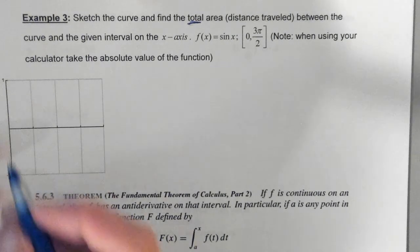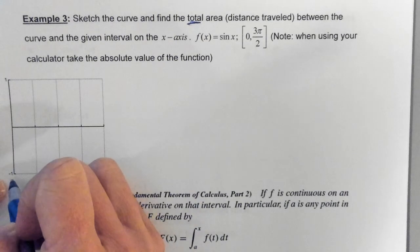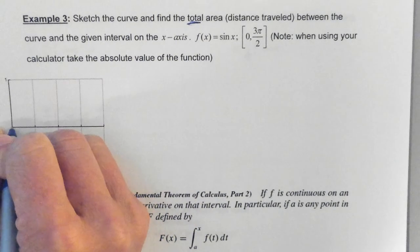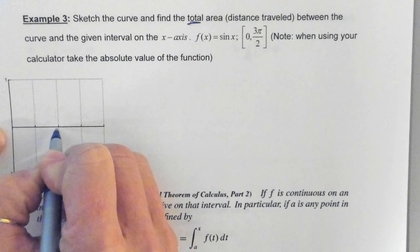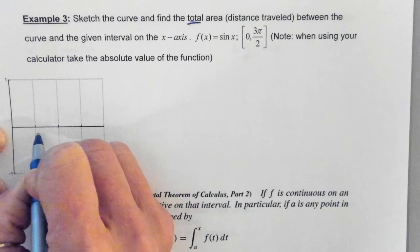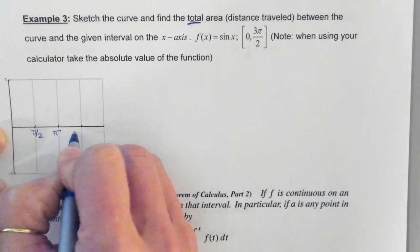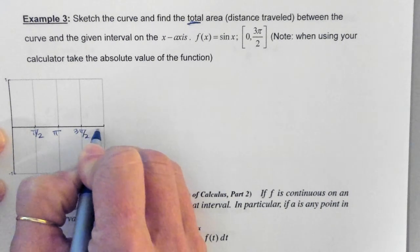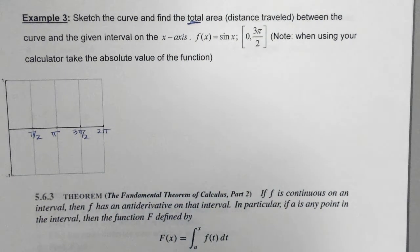So if I were to graph this function, this is a sine curve, so you notice we're going from negative 1 to 1. So this is 0. So this would be π over 2 would be here. This is π, bless you, 3π over 2, and 2π.